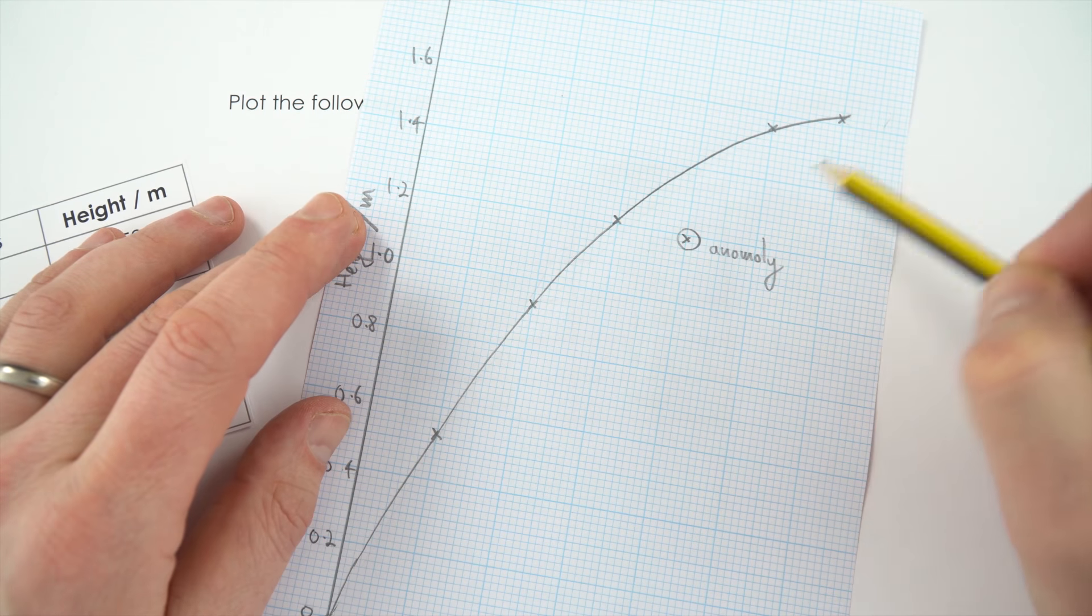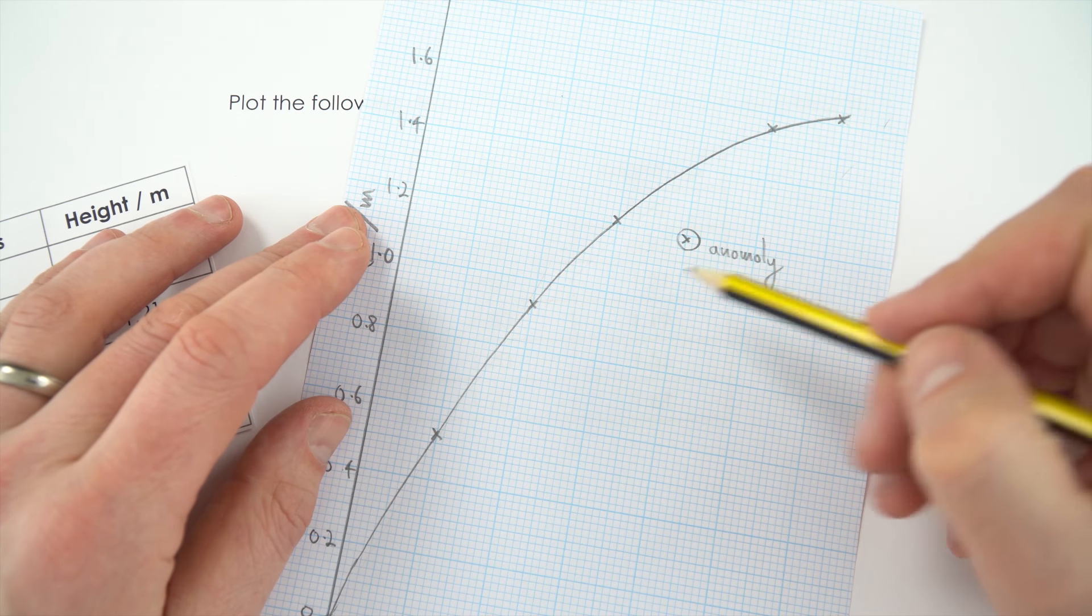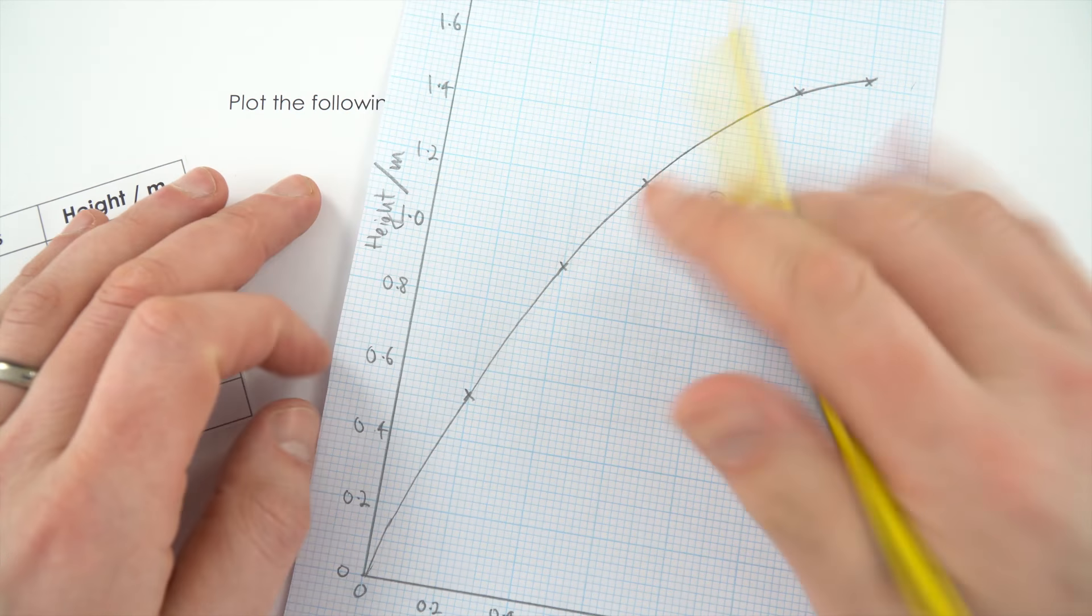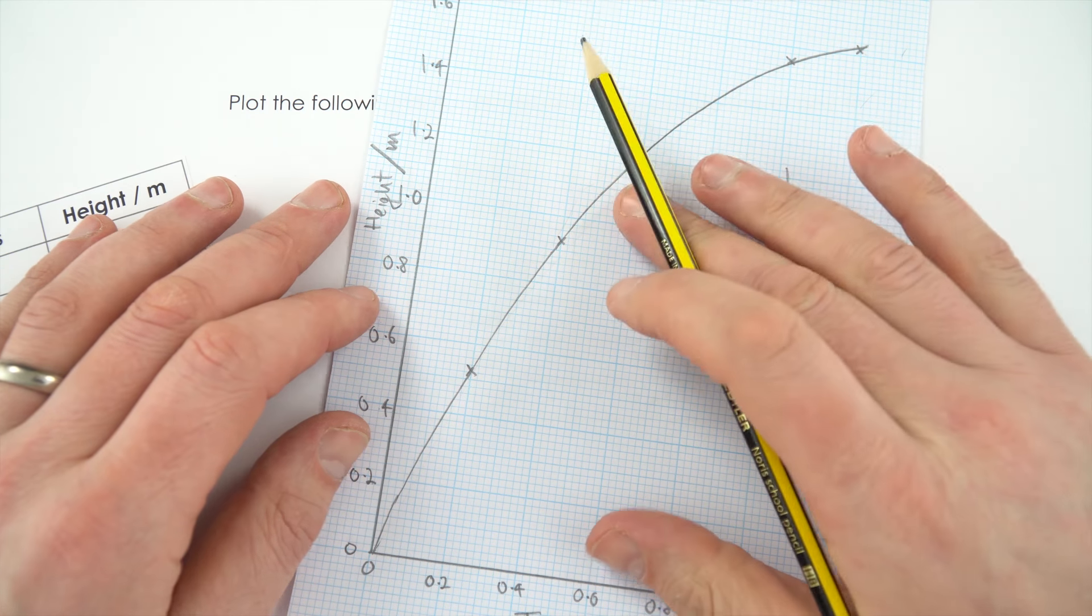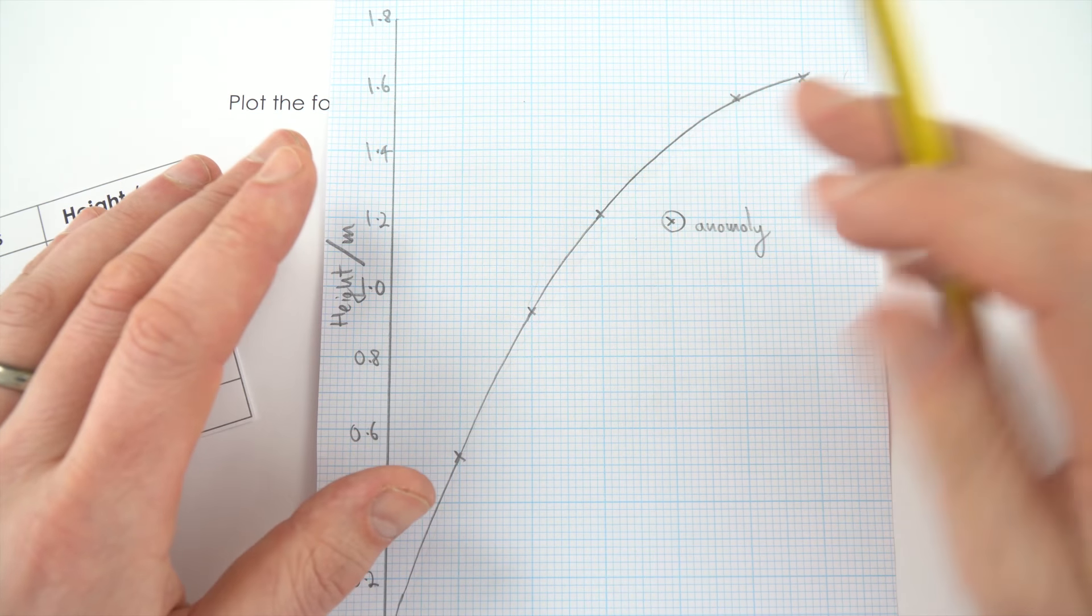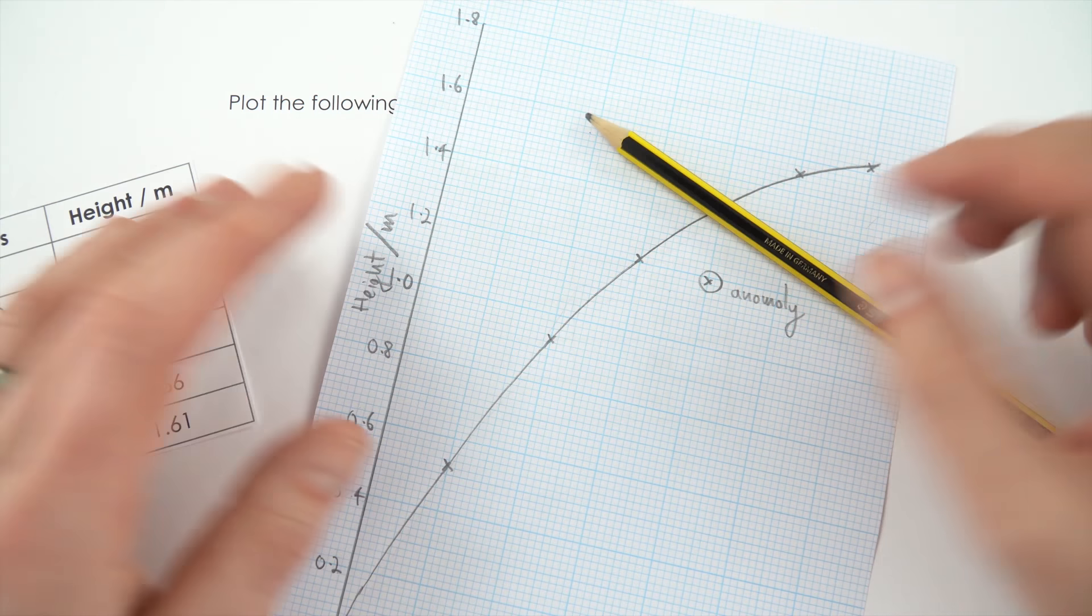So there we go. I've drawn an appropriate line of best fit for this data, identified the anomaly, I've made sure that I've labelled both the y and the x-axis, and all my points are plotted as precisely as I can. So that's all there is to it when it comes to drawing graphs.